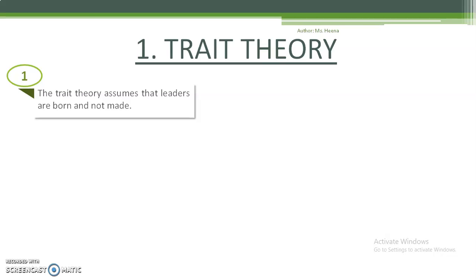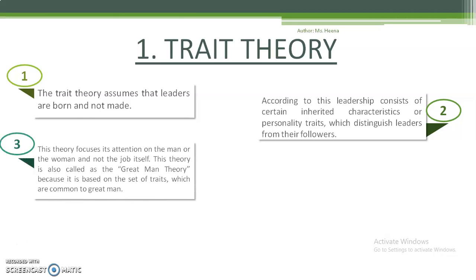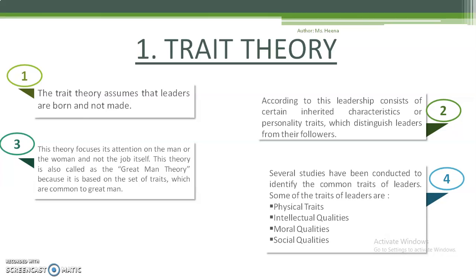Trait theory assumes that leaders are born and cannot be made. According to this theory, leadership consists of certain inherited characteristics. It focuses on inherited personality traits and directs its attention on the person rather than the job itself. It is also called the Great Man Theory, based on traits common to great men. Studies identified common traits such as physical traits, intellectual qualities, moral qualities, and social qualities.